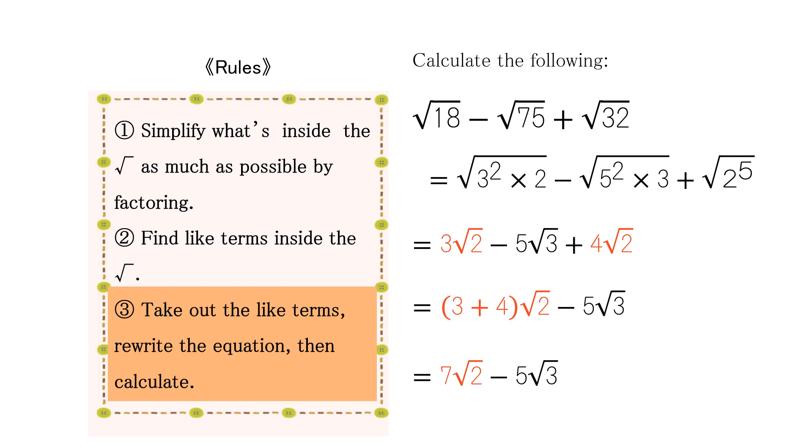By further simplifying, we get 7 square root of 2 minus 5 square root of 3.